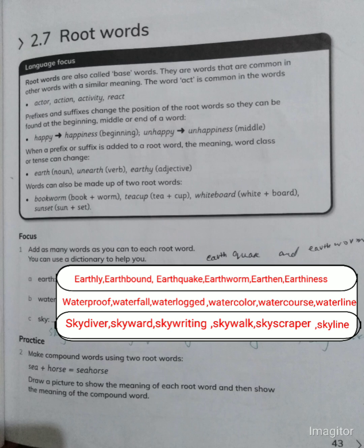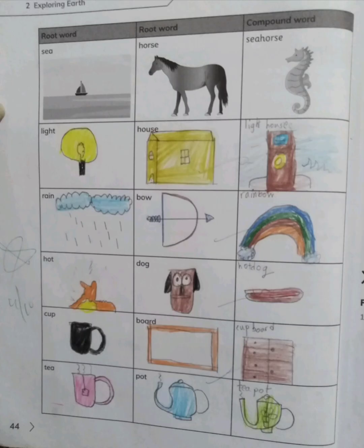The next question asks you to make another word with the help of a compound word. For example, 'seahorse' — 'sea' is one word, 'horse' is another, and together they form the compound word 'seahorse.' On page 44, examples include: seahorse, lighthouse, and rainbow — all formed by combining two separate words.